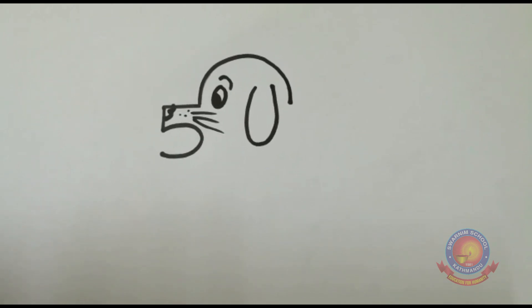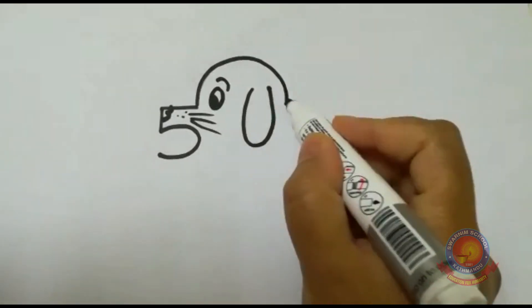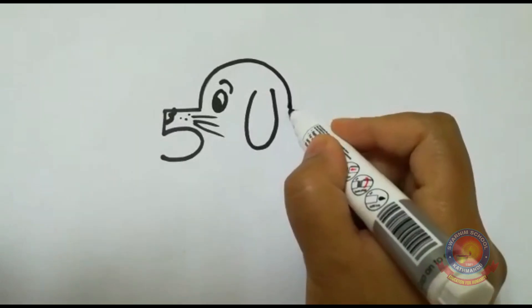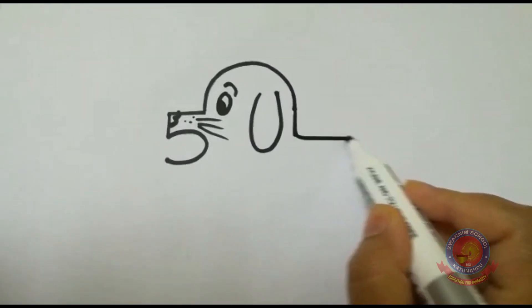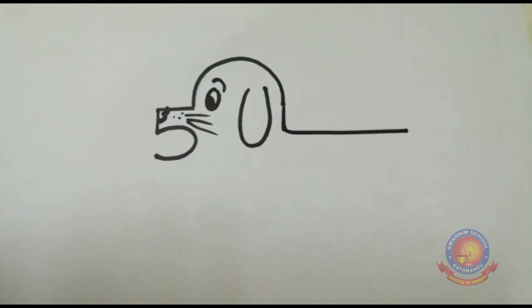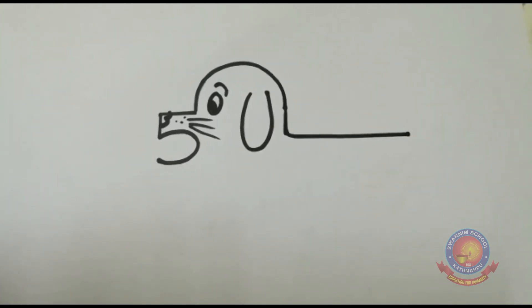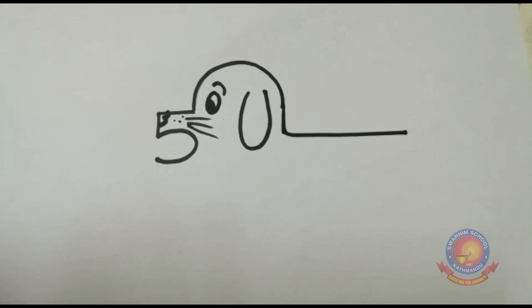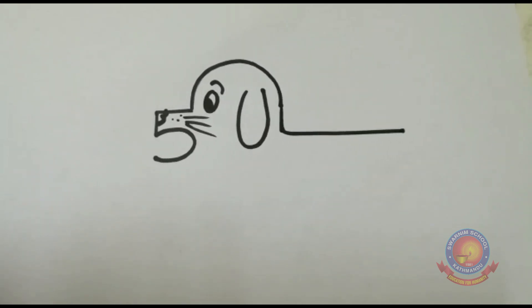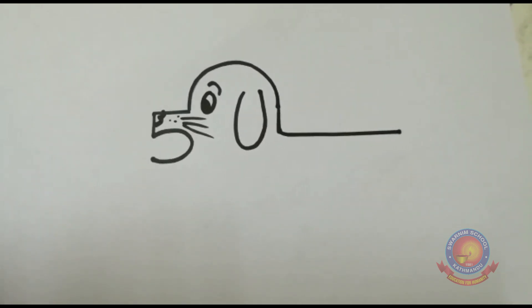Now after this, you make this line little bit more longer, little bit till down here and then straight line, sleeping line. Till this much clear, students. First we wrote number 5, opposite U, long small U, eye, 3 for nose, some dots and some lines.